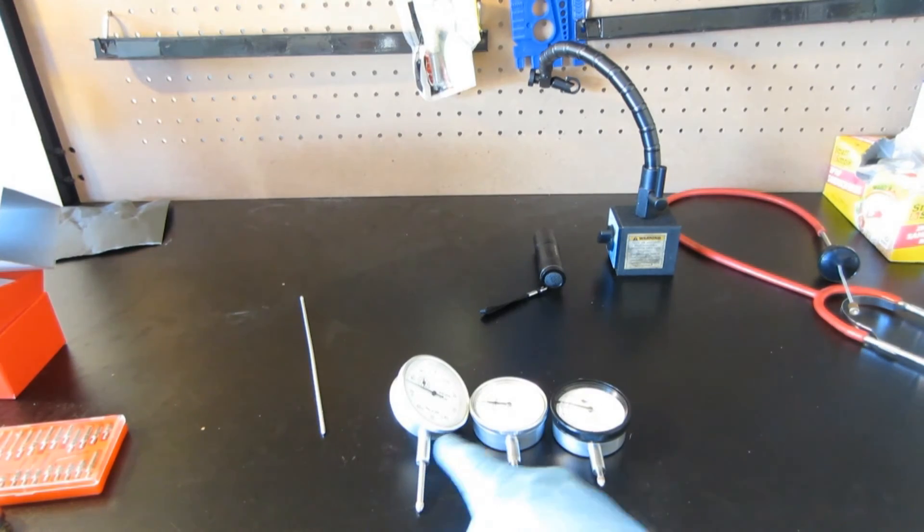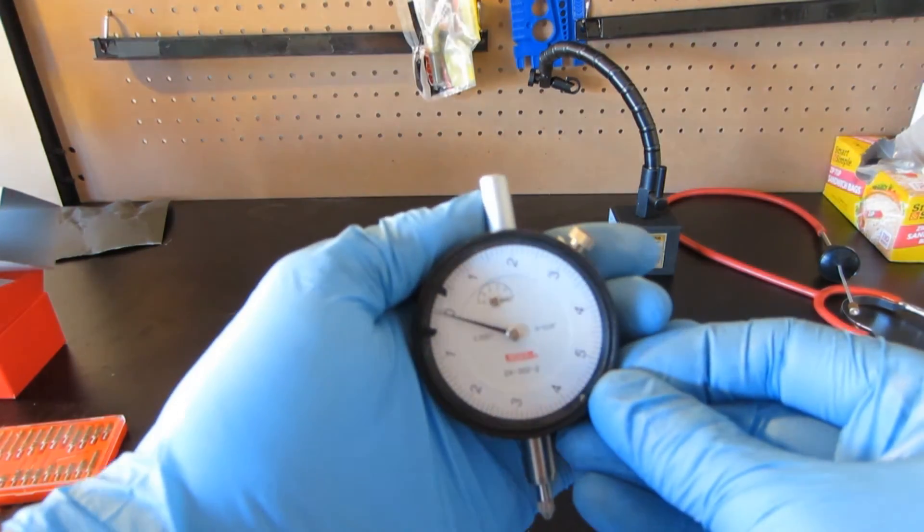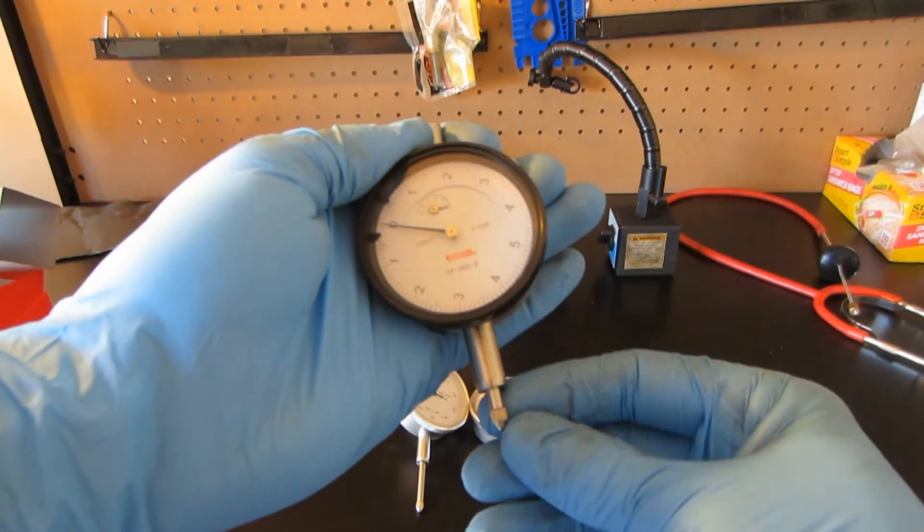We have our most accurate gauge that is graduated in ten thousandths, but has a very short travel. This gauge is great for measuring run out and cylinder bores.